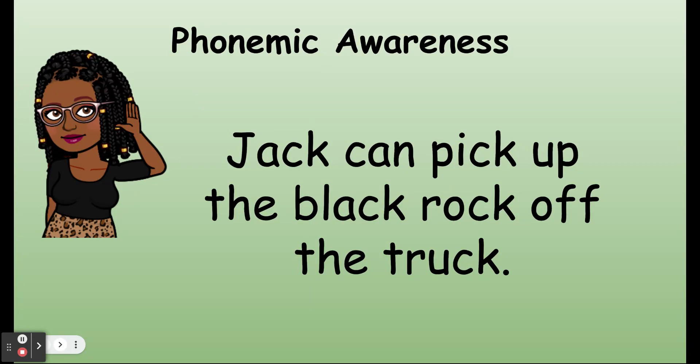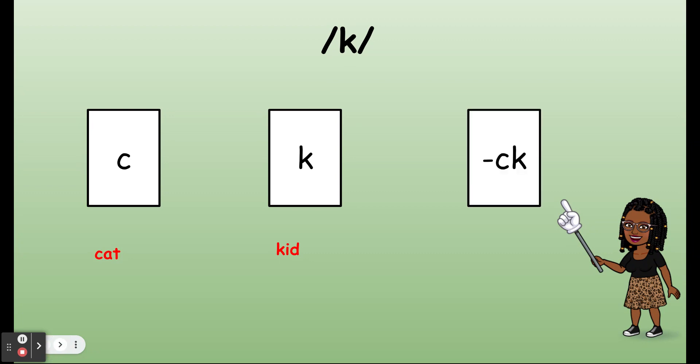Excellent! If you said K, kiss your brain. Now we know K can be spelled with C as in cat. The K sound can also be spelled with K as in kid. And today we are learning another way that we can spell K. CK spells K as in sock.